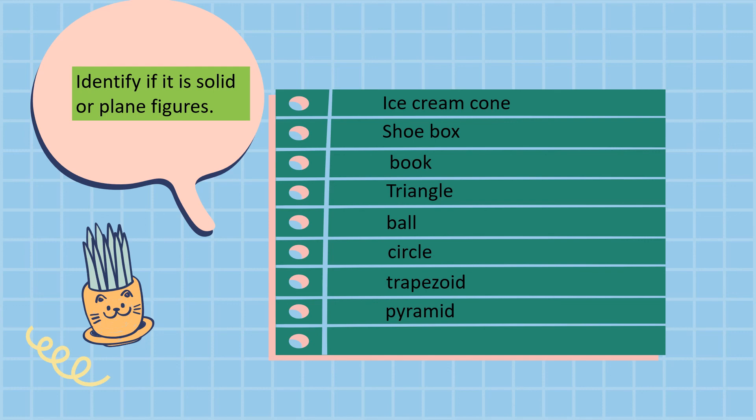Trapezoid is also a plane figure. Pyramid. That is a solid figure. And ice cube. Of course, it's a solid figure, and that is cube.